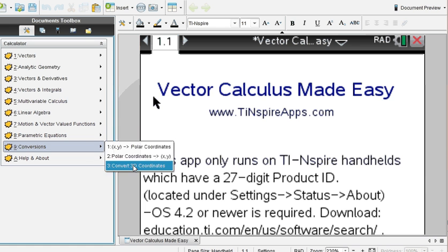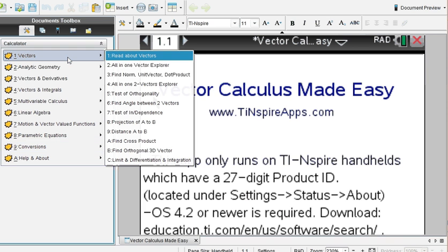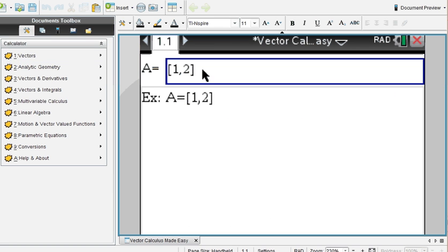And finally some conversions. Polar to rectangular. And also three dimensional coordinates. Spherical, cylinder, rectangular. So let's do some specifics. Very powerful is the all in one vector explorer.